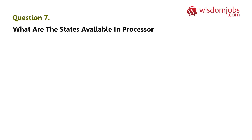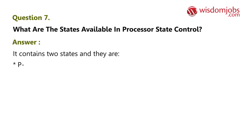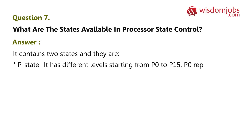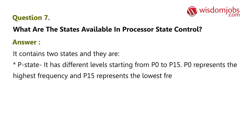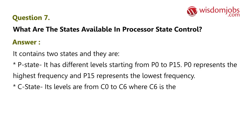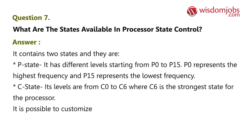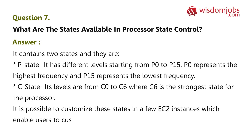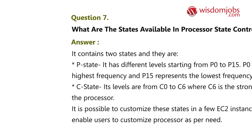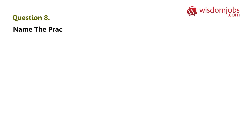Question 7: What are the states available in processor state control? Answer: It contains two states. The first is P-state, which has different levels starting from P0 to P15. P0 represents the highest frequency and P15 represents the lowest frequency. The second is C-state, with levels from C0 to C6, where C6 is the strongest state for the processor. It is possible to customize these states in a few EC2 instances, enabling users to customize the processor as per need.